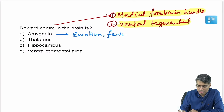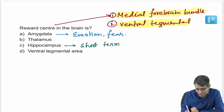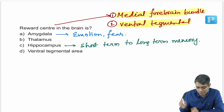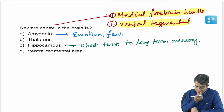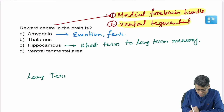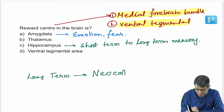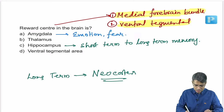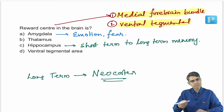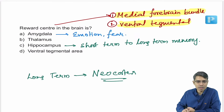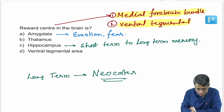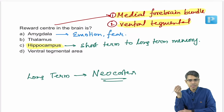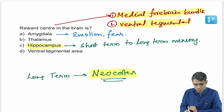Hippocampus converts short-term to long-term memory. Long-term memory is stored in the neocortex. The hippocampus is part of the Papez circuit, along with amygdala, anterior nucleus of hypothalamus, and parahippocampal gyrus — all controlling emotion, fear, and recent memory. The best answer here is ventral tegmental area.